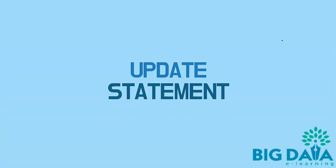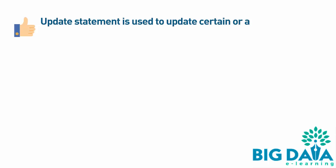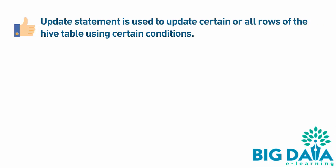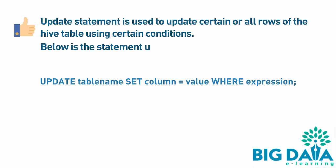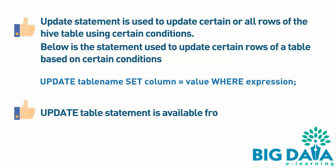Update Statement is used to update certain or all rows of the Hive table using certain conditions. Below is the statement used to update certain rows of a table based on certain conditions. Update table is available from Hive 0.14 and above.